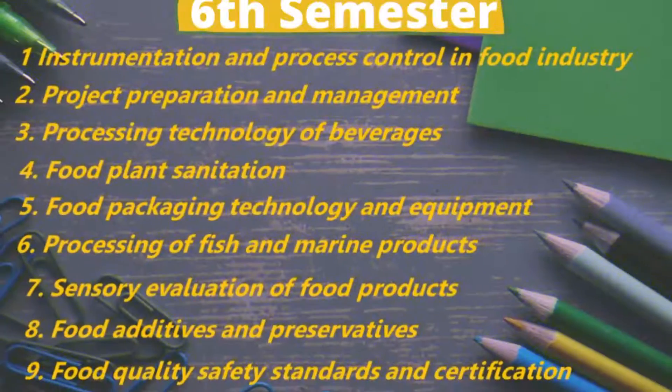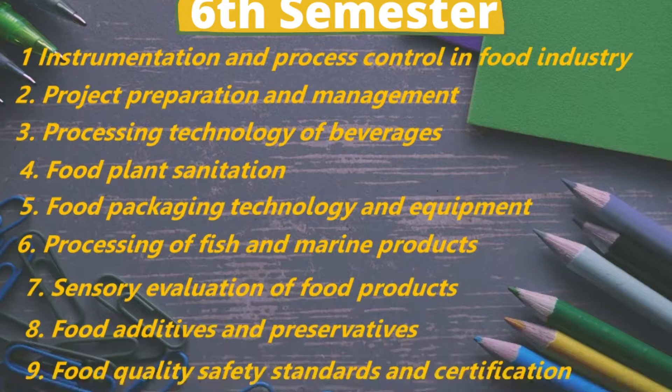These are the subjects of fifth semester. In sixth semester, we again have to read a lot of subjects. First one is Instrumentation and Process Control in Food Industry, which includes all types of instruments used in food industry like potentiometer, register, thermocouples, thermometer, radio frequency transmission channels, media receiver and transmitter, display devices, XY recorders, smart sensors, smart transmitters, and many more.